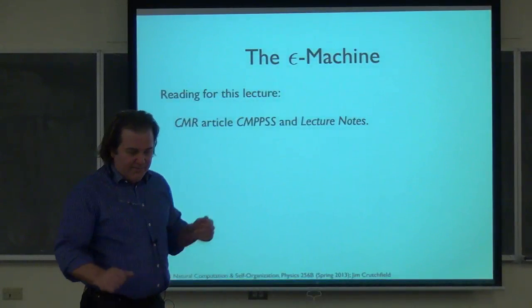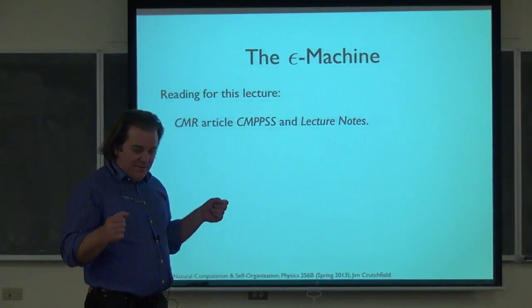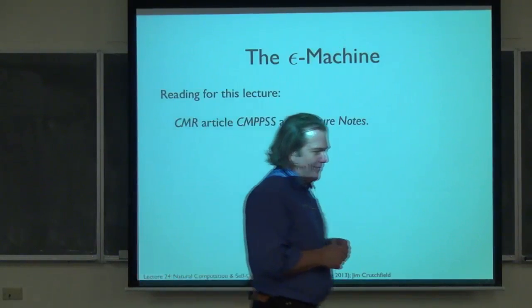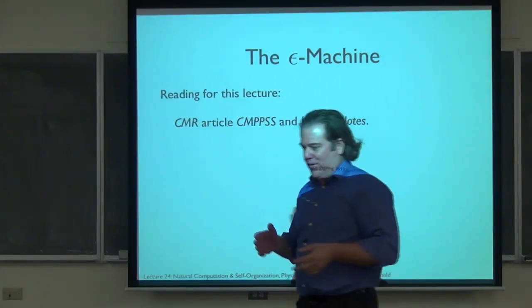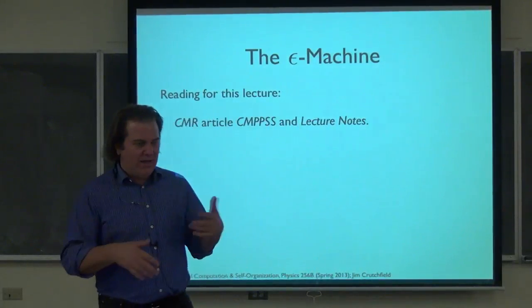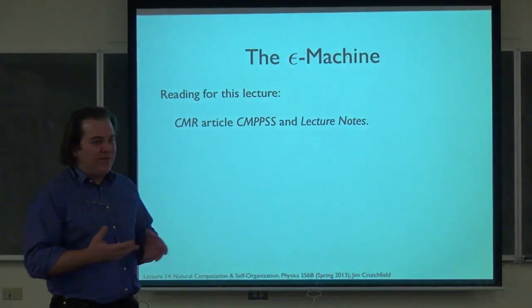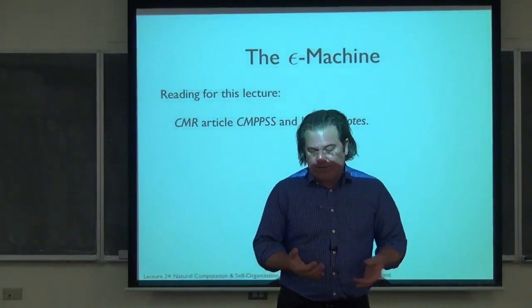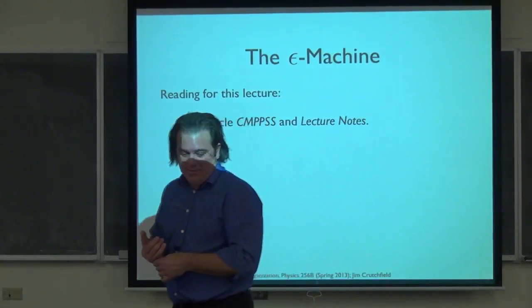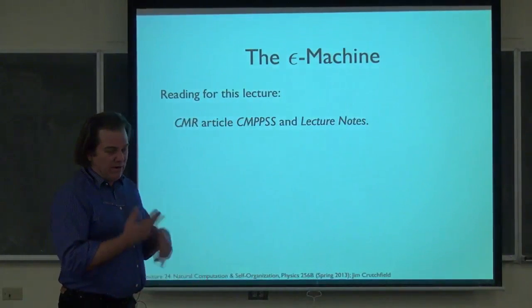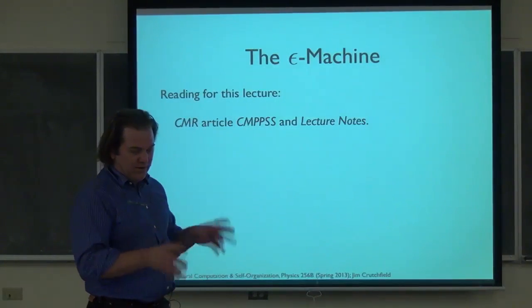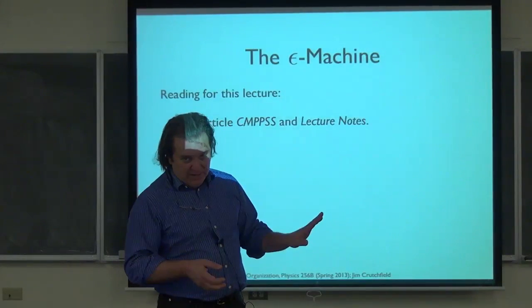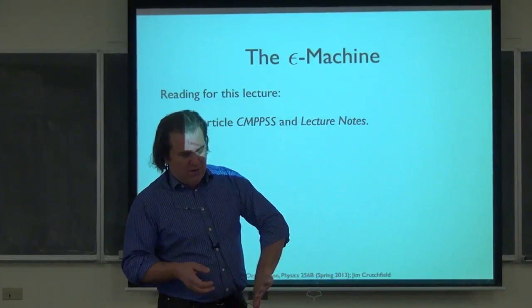Let's get started. Today we actually have some work to do. Tuesday was giving you an outline of one of the methods of calculating the epsilon machine given the description of a process in terms of the word distribution. Hopefully that's clear, and there are two problems on the current homework which are to complete the probabilistic reconstruction for the golden mean and for the even process.